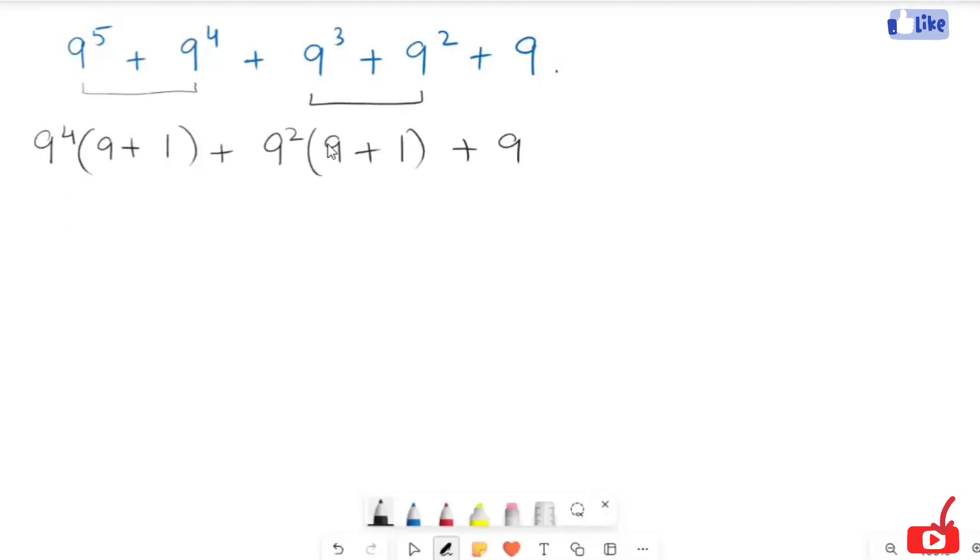Now, this expression turns to 9 to the power 4. I'm going to add up the inner value, so this will turn to 10. 10 to the power 2, the inner value is turned to 10, plus 9.